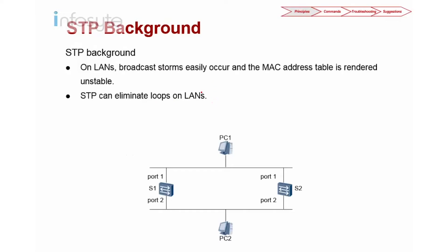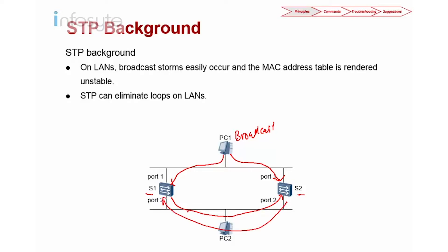Let's look into the need for STP and what it is trying to solve. Here you can see PC1 connected to switch number one and switch number two. When switch one has a broadcast — and broadcast is quite common in a network — PC1 will broadcast to port one of switch one and port one of switch two simultaneously. Since this is a broadcast, it will be sent to the other ports, repeating endlessly inside the loop. We call this a broadcast loop.